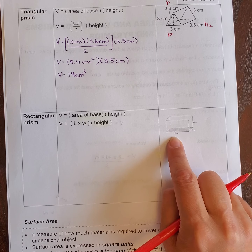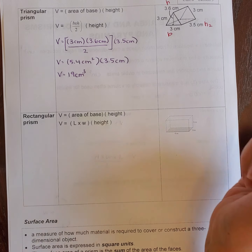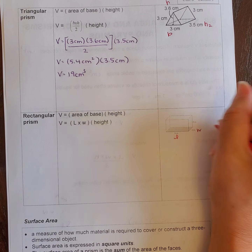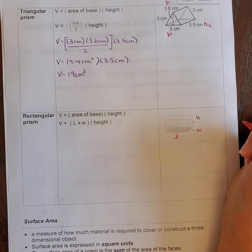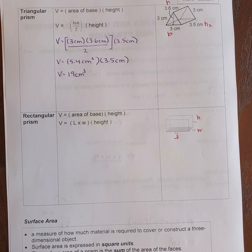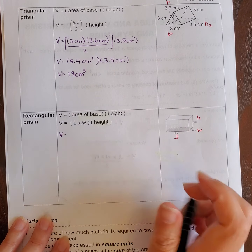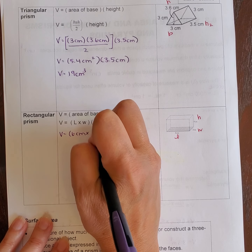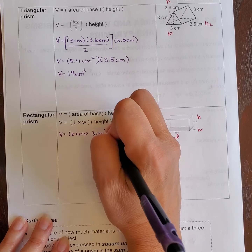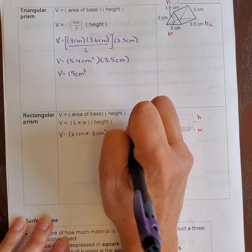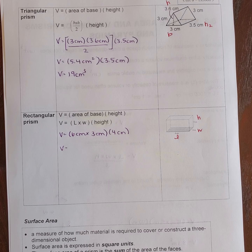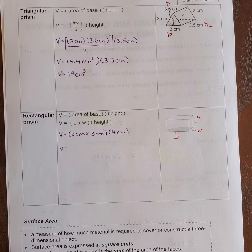The 6 centimeters is the length, the 3 centimeters is the width, and the 4 centimeters is the height of the rectangular prism. So volume equals 6 centimeters times 3 centimeters times 4 centimeters. Because this is straight multiplication, you don't have to do it in two steps — 6 times 3 times 4 equals 72.